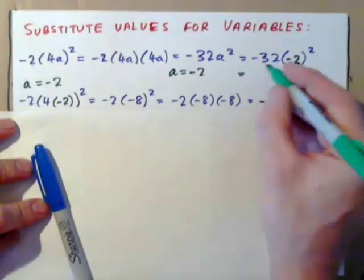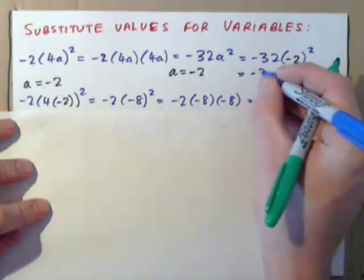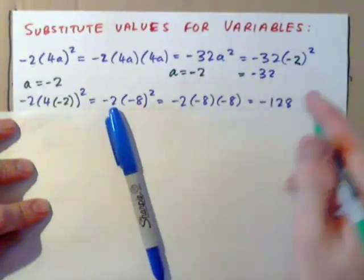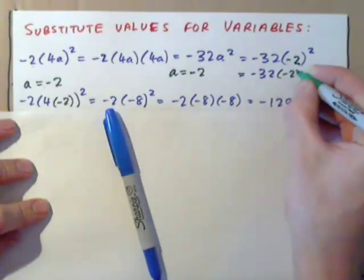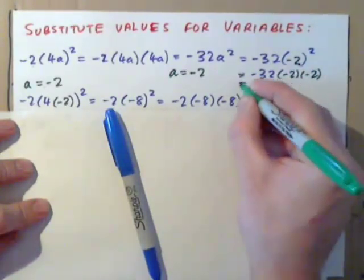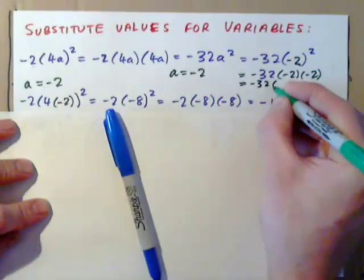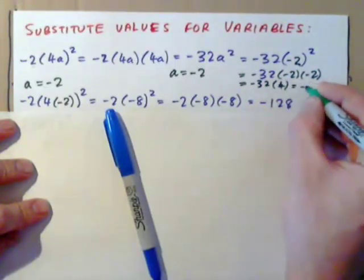So that becomes -32, and -2 all squared is -2 times -2, so it's -32 times 4, which is -128.